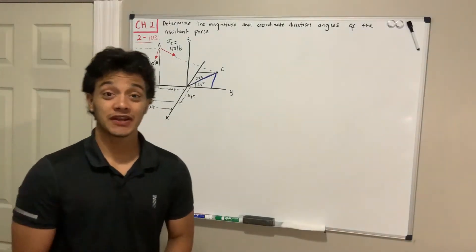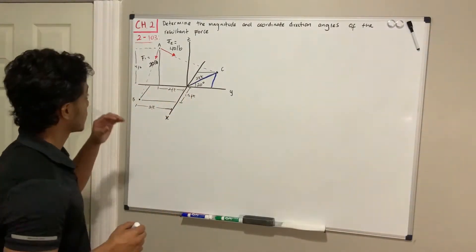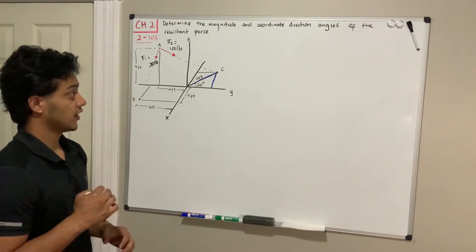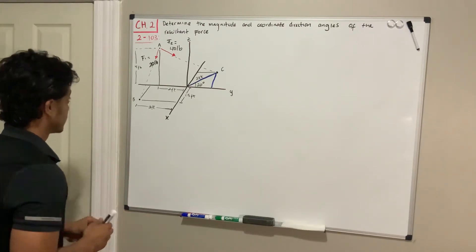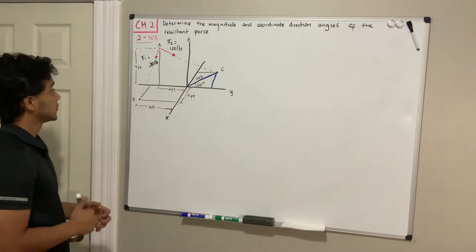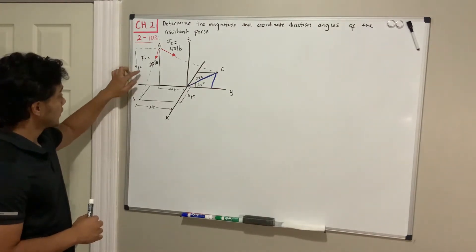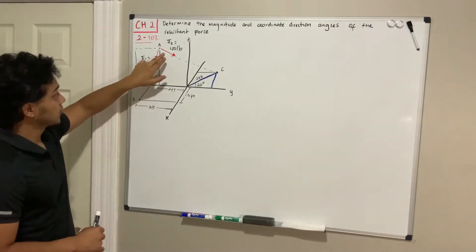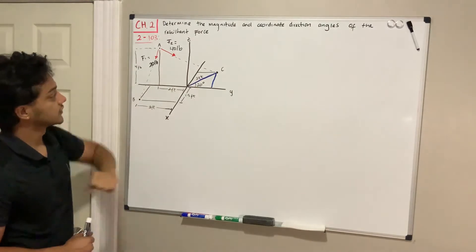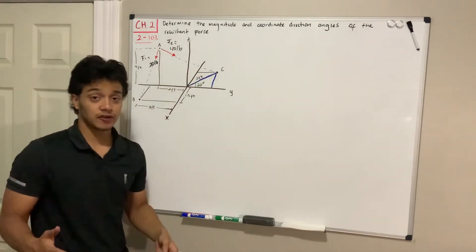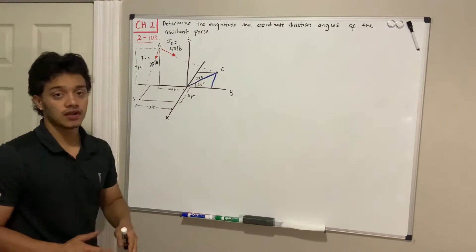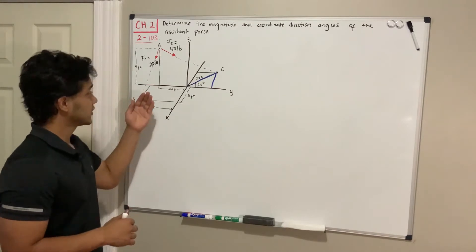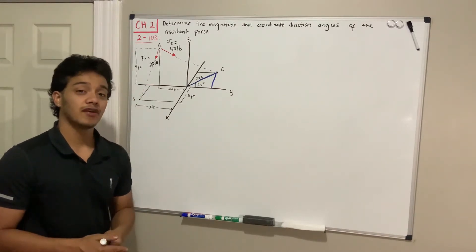Welcome back everyone to Learning by Teaching and we're in statics. We're going to do problem 2.103: determine the magnitude and coordinate direction angles of the resultant force. We have two forces, F1 and F2. F1 is 20 pounds directed from A to B, and F2 is 40 pounds directed from A to C. The plan is to use points A, B, and C to find unit vectors, decompose the two forces, then add them to find the resultant.